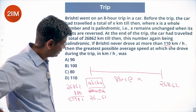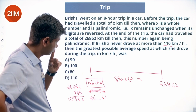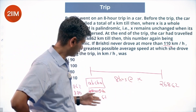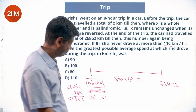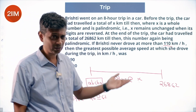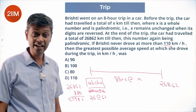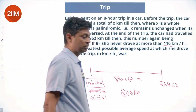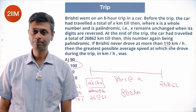To maximize average speed, the distance traveled should be as large as possible, so the starting reading should be as small as possible. The smallest valid palindrome in the 26X62 form is 26062. The distance traveled is 26862 − 26062 = 800 kilometers. Traveling 800 km in 8 hours gives a maximum possible average speed of 100 kilometers per hour.